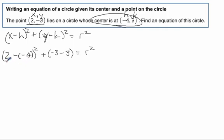So let's just calculate it out. So this gives us 6 squared plus negative 6 squared equals r squared. 36 plus 36 is r squared. And of course, 72 equals r squared.